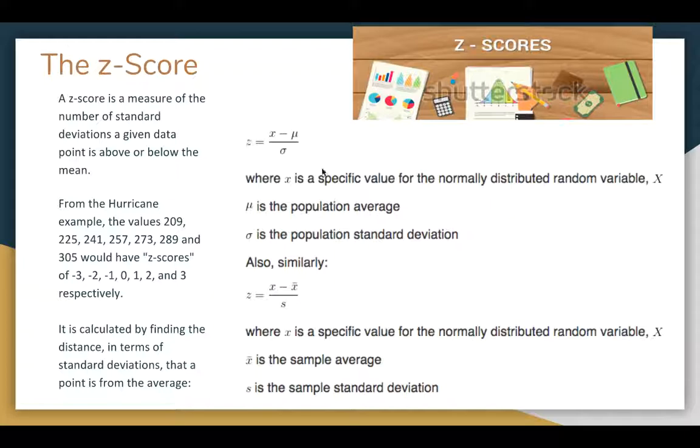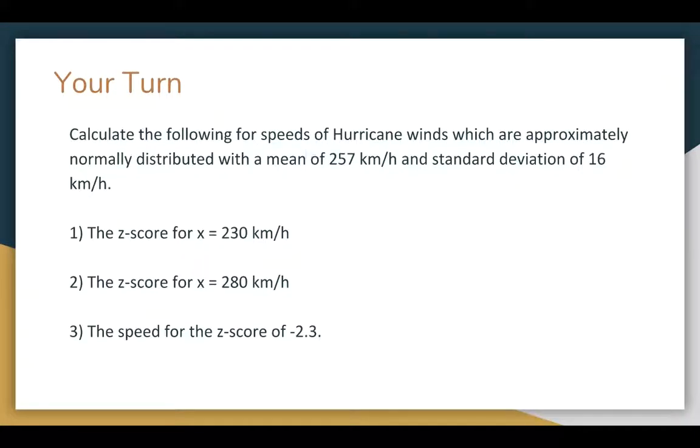So this is actually the same formula twice. And the only reason why it's showing up twice is because the mean for population is written with the mu, and the sigma is used for the population standard deviation. So we can also use in a sample x-bar and s. Really, you just have to know that it's x minus the mean divided by the standard deviation. And that gives you how many above the mean you are, or below.